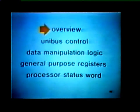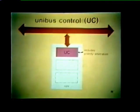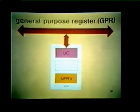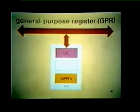Let's start with a brief overview of the three major elements that make up any PDP-11 processor. One of these elements is called the unibus control, or UC. The unibus control handles communications between the processor and external devices. It also contains the priority arbitration logic that determines which device is to become the next bus master. The second major processor element is a set of general purpose registers, or GPRs.